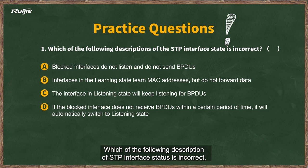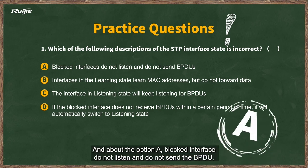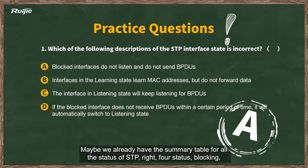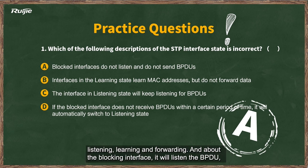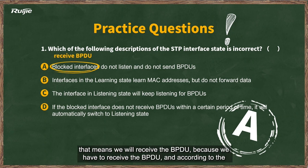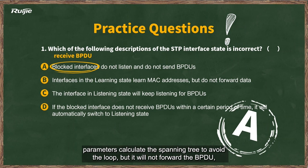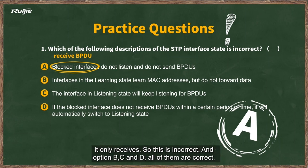The question was: which of the following descriptions of STP interface status is incorrect? The answer is option A. Option A states that a blocked interface does not listen and does not send BPDUs. Looking at the summary table for all STP status — blocking, listening, learning, and forwarding — a blocking interface will actually receive BPDUs, because it needs to receive them and calculate the spanning tree to avoid loops. It will not forward BPDUs, only receive them. So option A is incorrect.